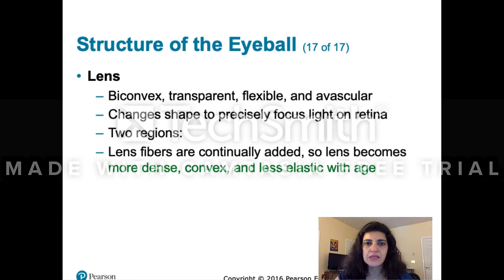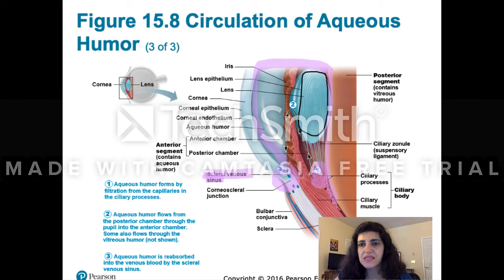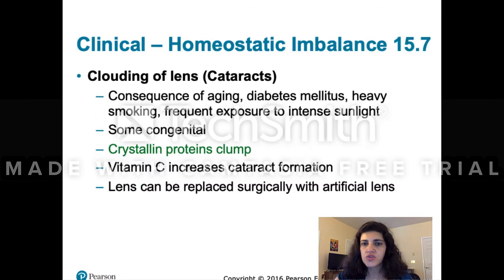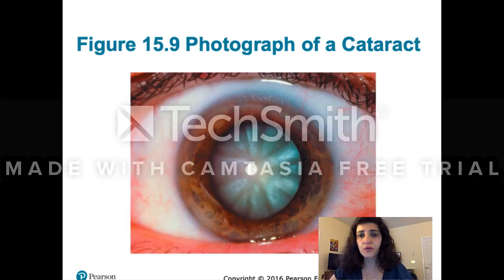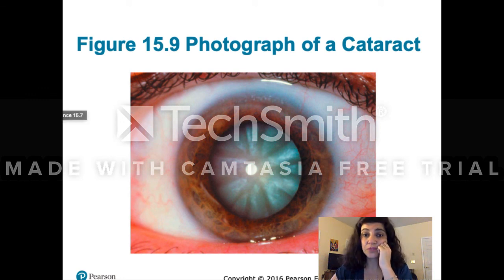The lens is transparent because it contains a transparent protein called crystalline. When the crystalline protein clumps — which typically happens during aging — it causes cataracts. Other causes include diabetes, heavy smoking, exposure to intense sunlight, or congenital issues. Cataracts appear as a whitish cloudiness of the lens. The only treatment is surgical: the lens is replaced with an artificial lens.